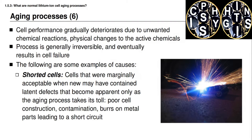Another aging process has to do with the development of an internal short circuit inside the cell. A lithium-ion cell that appeared acceptable when new may have contained some latent invisible defect that becomes apparent only as the aging process unfolds. There might have been poor cell construction, contamination, or metal sharp edges called burrs on the current collectors. Over time, the stresses and strains of each charging and discharging cycle can wear through the separator and lead to contact between the electrodes, causing a short circuit that could result in a fire.